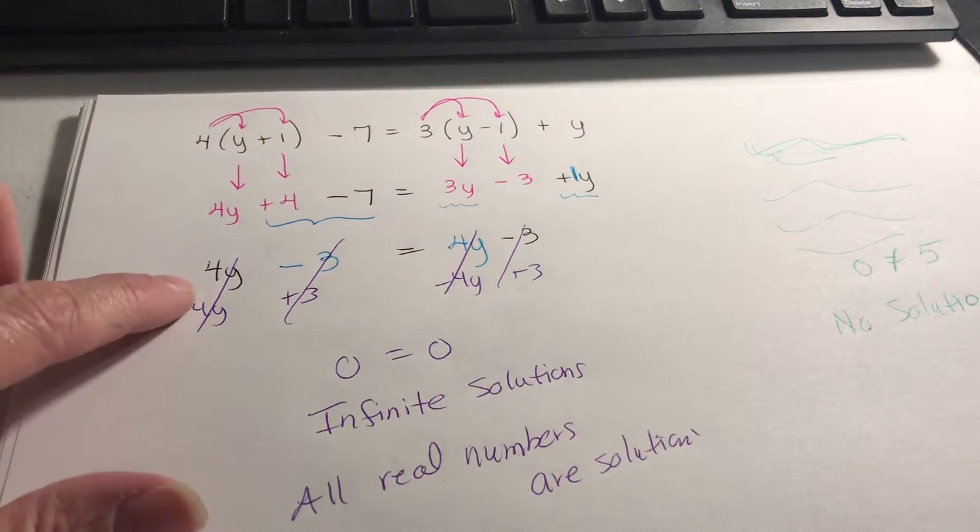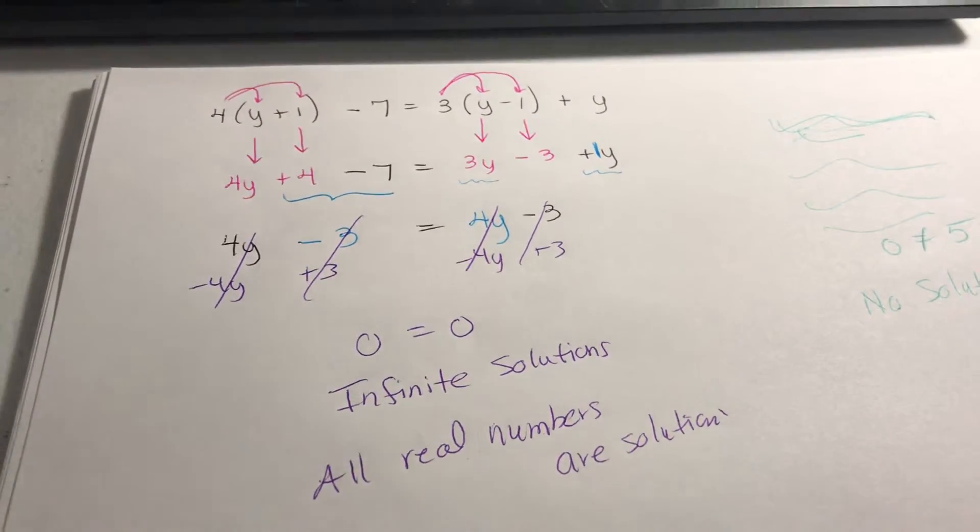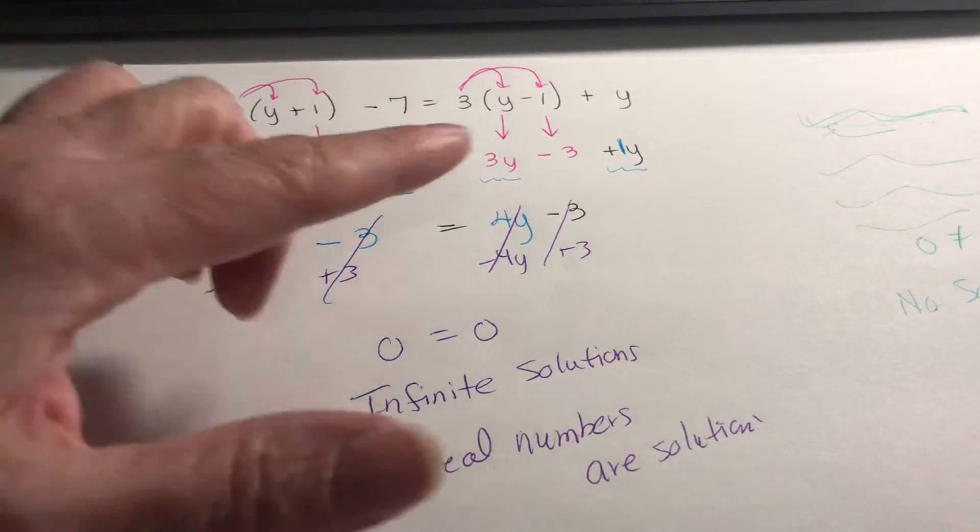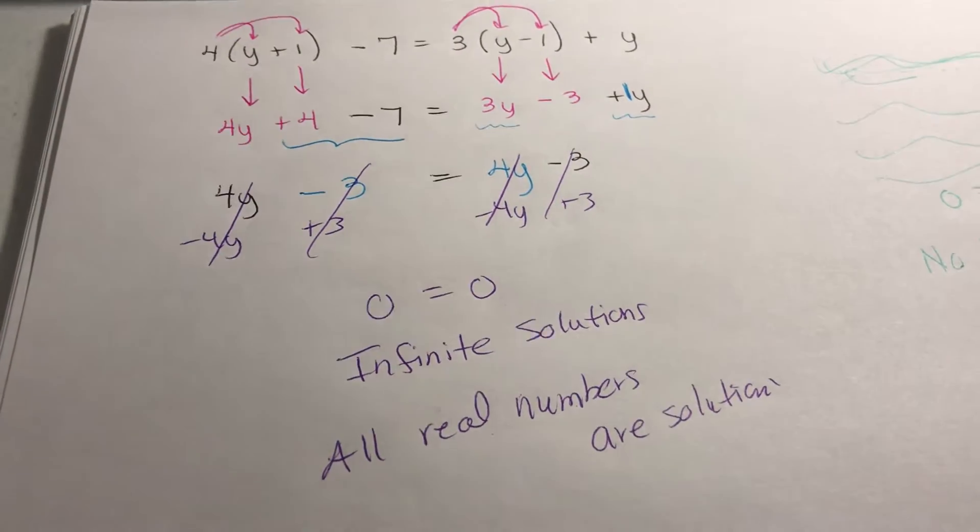Now at this point I've got 4y minus 3 equals 4y minus 3. They're identical. So if I subtract 4y on both sides and add 3 on both sides I get 0 equals 0.